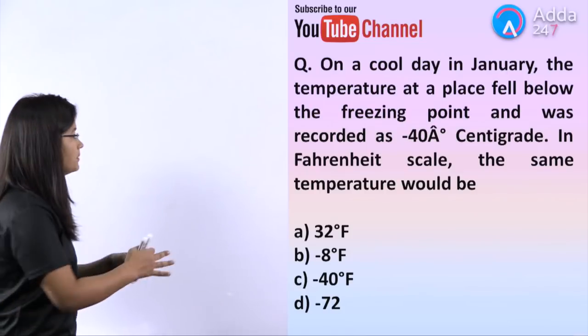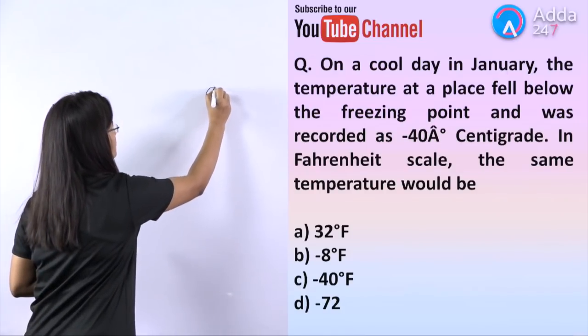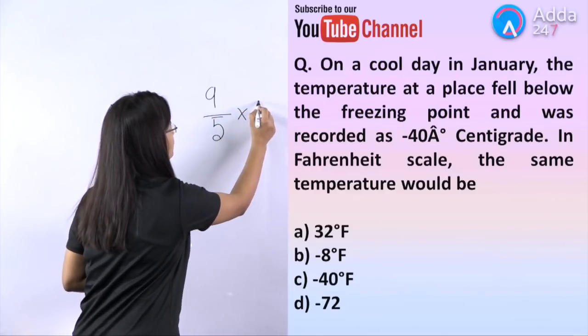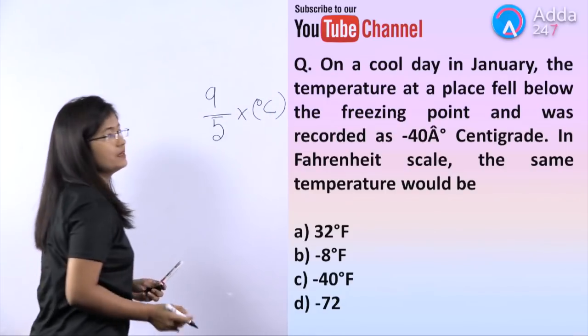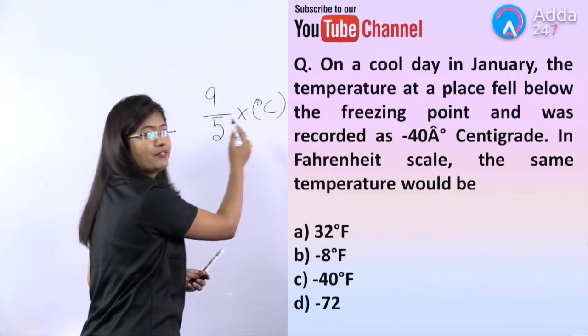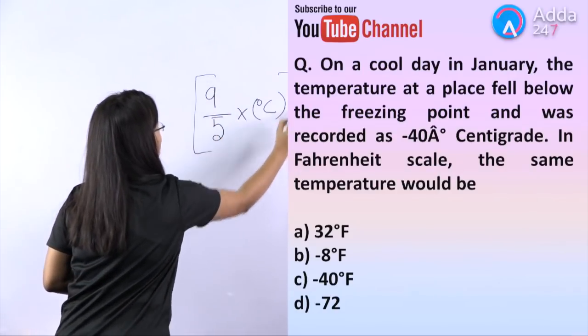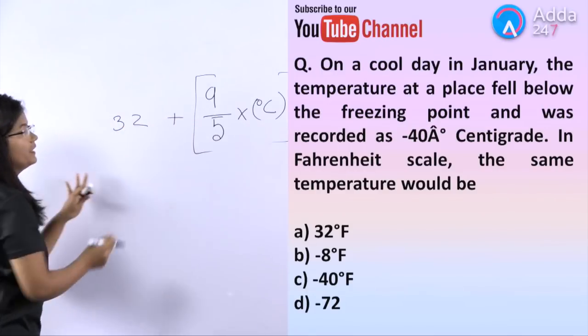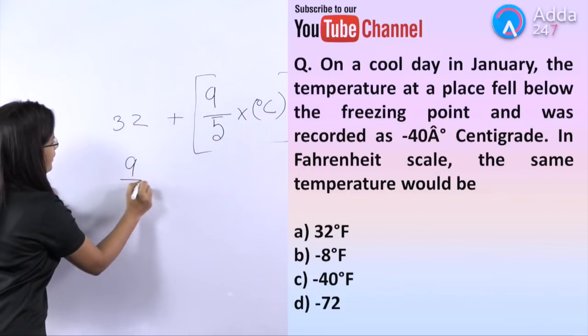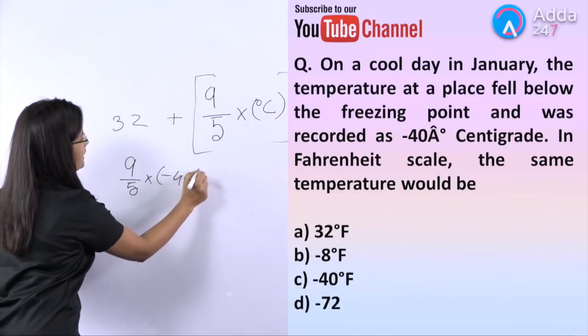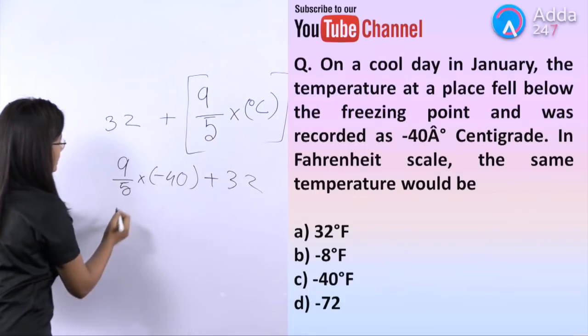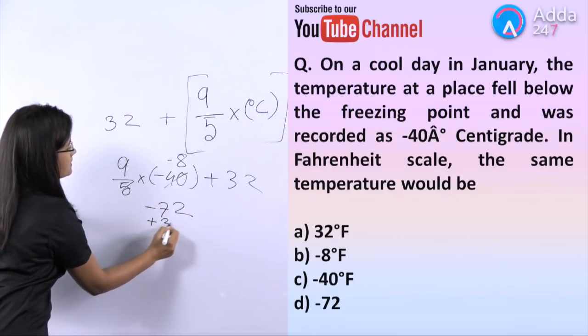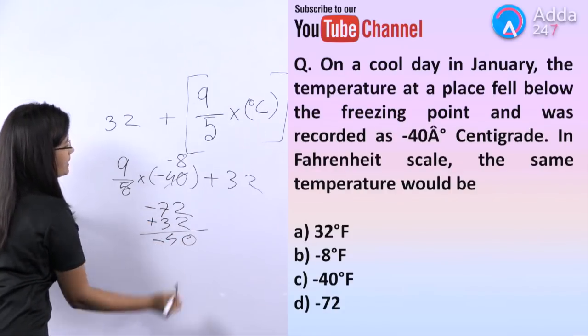You can remember this as a simple formula. In centigrade and Fahrenheit, if it has to be the same, then it is minus 40 degrees. Otherwise, you can use this formula: 9 by 5 into the degrees centigrade, multiply that and then add 32. So 9 by 5 into minus 40 degrees centigrade plus 32. This will come up to minus 72 plus 32.